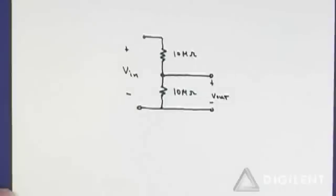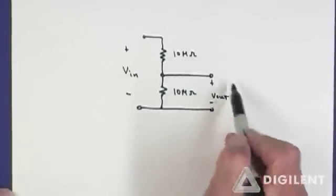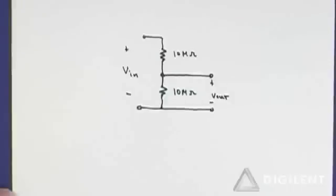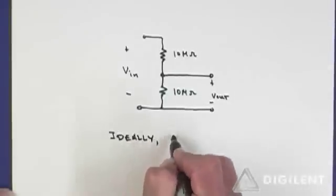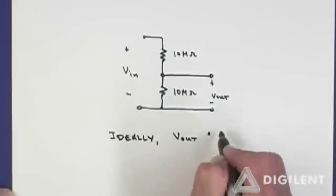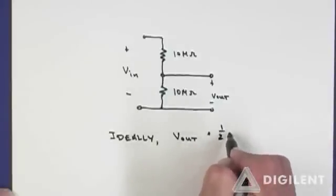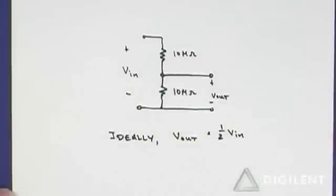Ideally, any meter I connect up to Vout acts as an open circuit. Therefore, Vout is going to be 1 half of VN by our voltage divider formula.